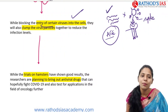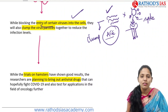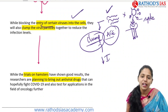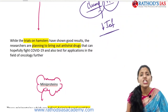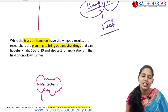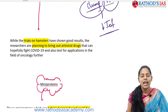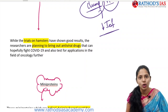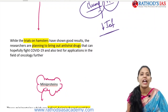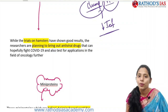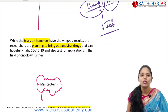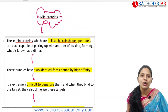When we use mini proteins, they lead to clumping of virus particles together, which finally reduces infection levels as well. This study is currently under trials in hamsters and has shown good results. Now researchers are planning to bring out an antiviral drug that can fight against COVID-19, and they are also going for testing in other applications, even in the field of oncology — the study of cancers.